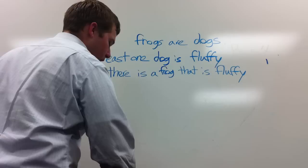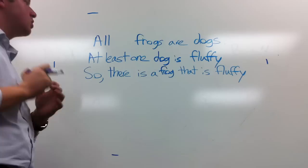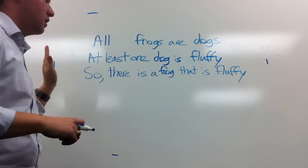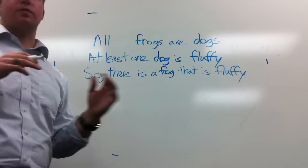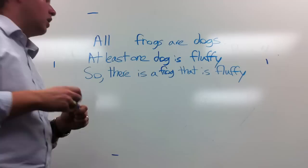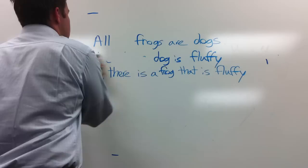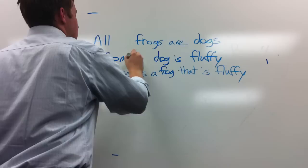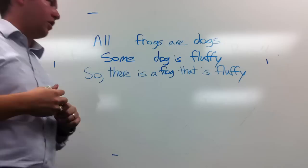Moving on to the next one: 'at least one dog is fluffy.' If you can immediately recognize that statement type, you're in good shape. But I still recommend looking at the bottom of section 5.1 because some examples are much trickier. 'At least one dog is fluffy' is just another way of saying 'some dogs.' So we change it to: 'Some dog is fluffy.'